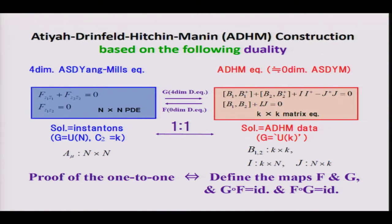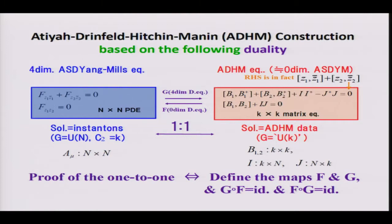Before reviewing the explicit construction, I would like to comment. In the commutative ADHM equation, and in the non-commutative situation, the commutator of spatial coordinates appears — because Z and B always appear in pairs. The existence of the commutator of B implies the existence of the commutator of spatial coordinates. In commutative spaces the right-hand side is of course zero, but in non-commutative situations this becomes non-zero in general. This point is important.